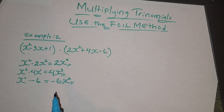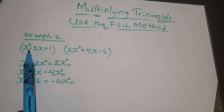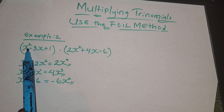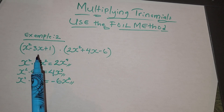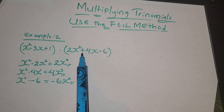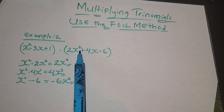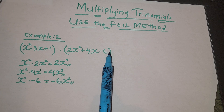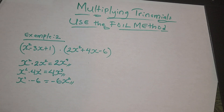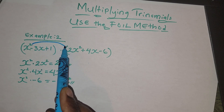By the way, this is a trinomial multiplying a trinomial. How do I know it's a trinomial? Because we have a sign dividing each variable and coefficient. We have x² - 3x + 1 — those are three terms: 1, 2, 3. And we have 2x² + 4x - 6 — also three terms: 2x² is a term by itself, 4x is a term by itself, and -6 is a term by itself.